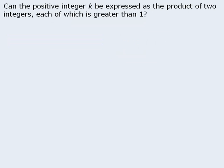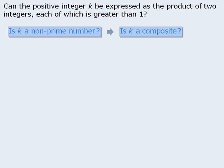Here's another example. Can the positive integer k be expressed as the product of two integers, each of which is greater than 1? This is a good example of the importance of rewording the target question, since it isn't exactly clear what is being asked. Prime numbers can only be written as the product of 1 and the number itself. So if k can be expressed as the product of two integers each greater than 1, that means k is not prime. So the question is asking: is k a non-prime number? In other words, is k a composite number? The true target question is hidden within the words here.